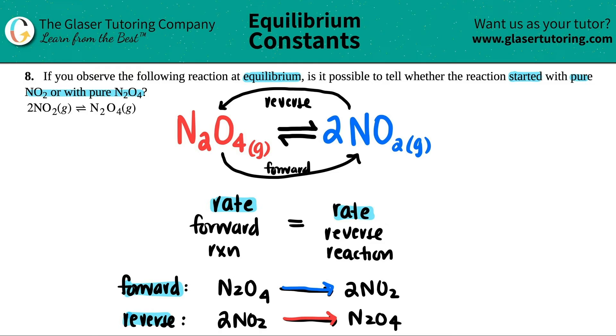So can we tell if we started with pure NO2 or with pure N2O4? I don't know, right? Because at equilibrium, all you know is that the forward reaction is happening and the reverse reaction is happening. But can we go back in time to see what we had if you're just looking at it at equilibrium? No.